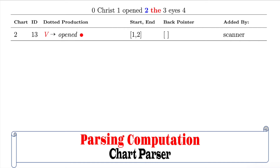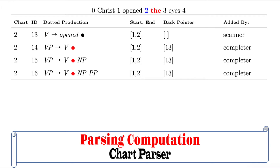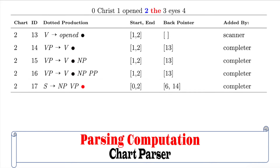Since the VP production has been completed, we can now shift the dot to the right of V of chart 1. All are completed by ID number 13. Since the VP production has been completed by ID number 14, we can now shift the dot to the right of VP of chart 0. This tells us that we have already scanned a sentence, but what has been scanned so far is just a phrase — CHRIST OPEN — it has no direct object yet, so the parsing must continue.